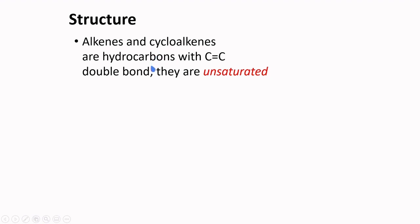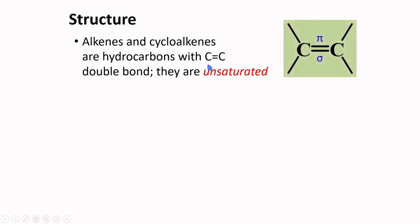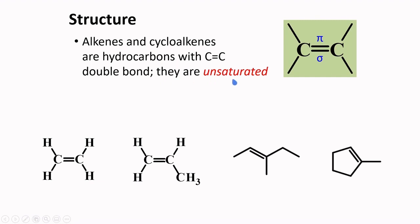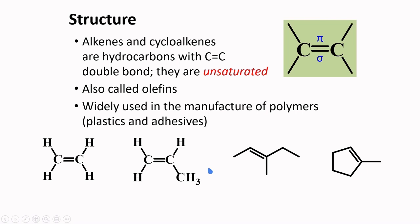Alkenes and cycloalkenes are hydrocarbons with C-C double bonds. They are unsaturated. The term unsaturated means that more hydrogen atoms may be added to the hydrocarbon to make it saturated — that is, all bonds become single bonds. In the double bond, one of the bonds is sigma, while the other is pi. These compounds are also called olefins. Alkenes are widely used in the manufacture of polymers, such as plastics and adhesives.